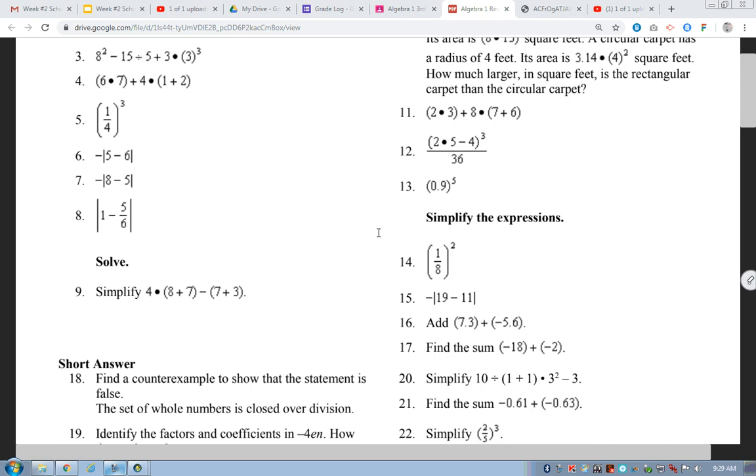Alright? 1 minus 5 sixths. The way I would look at this is 6 sixths minus 5 sixths. Right? Okay? Get a common denominator. Right? Does that make sense to everybody in here? We all understand how I got 6 sixths. Alright? So, that leaves me with 6 minus 5? 1 sixth. Right? And the absolute value there is 1 sixth.